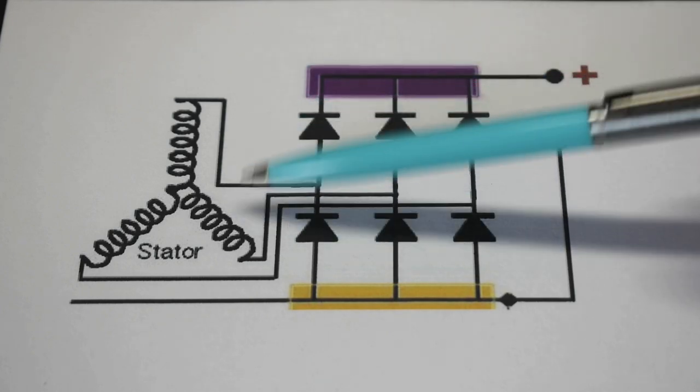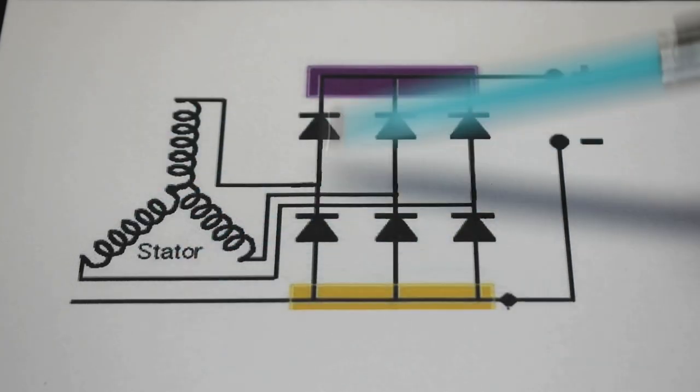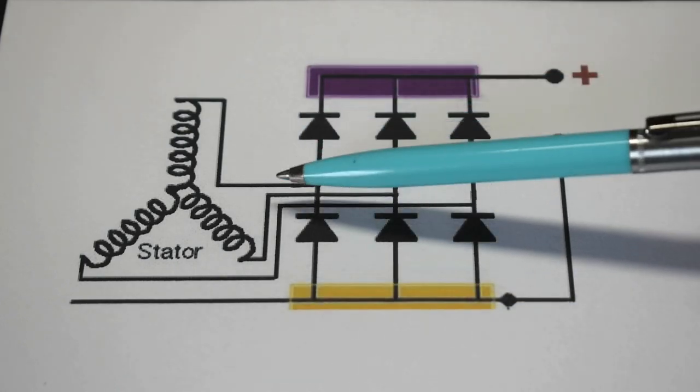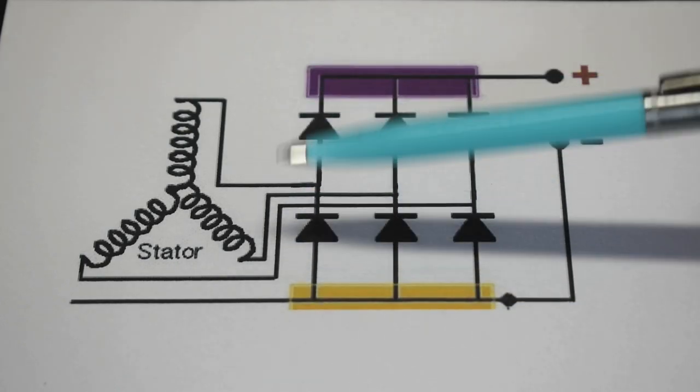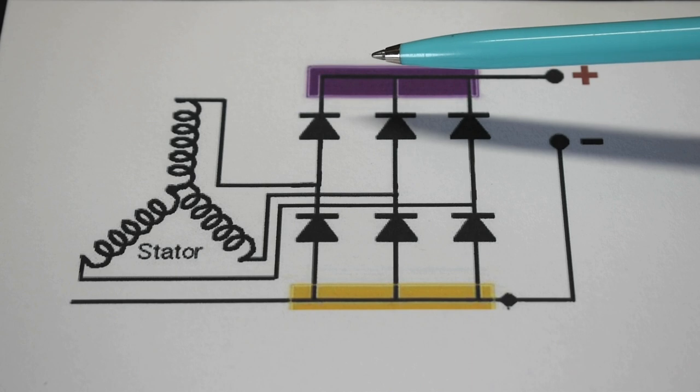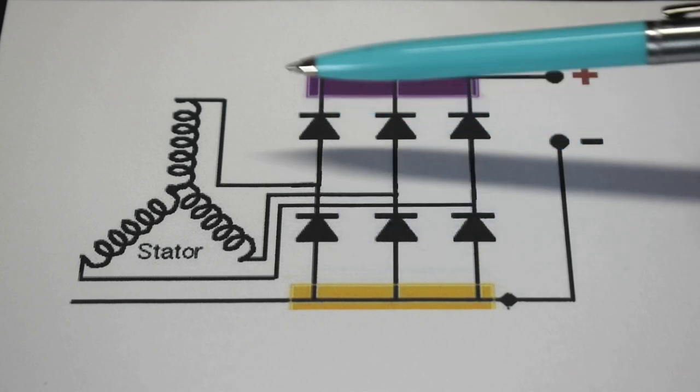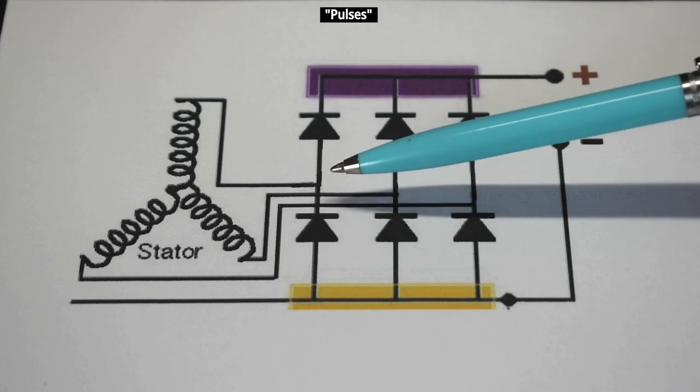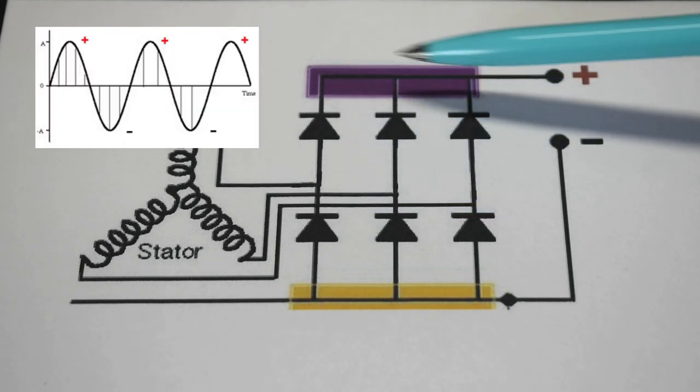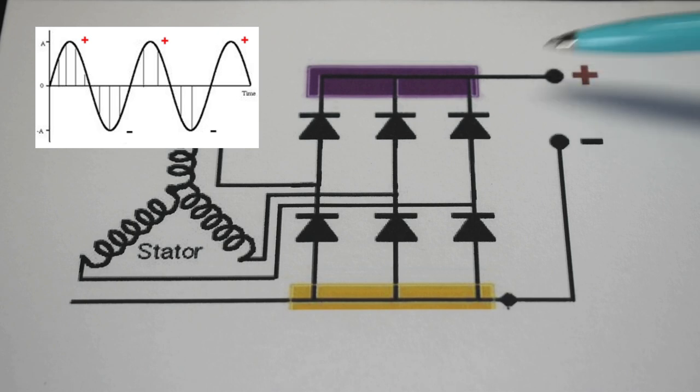So as this is spinning the stator or the magnets around the stator you have a voltage being produced. Of course the faster it spins the higher the voltage output. The slower it spins the lower the voltage output. So only the positive peaks of the AC waveform are going to be able to pass in this direction making this your positive.